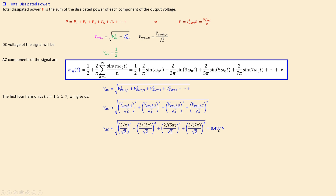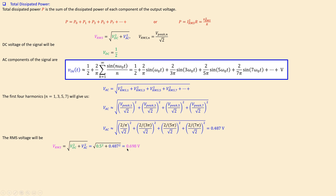Doing the math, the AC RMS voltage V_AC comes out to approximately 0.487 volts. With V_DC = 0.5 V and V_AC = 0.487 V, the total RMS voltage is √(0.5² + 0.487²) ≈ 0.698 volts. The dissipated power is then V_RMS² / R = (0.698)² / 50 ≈ 9.75 milliwatts.